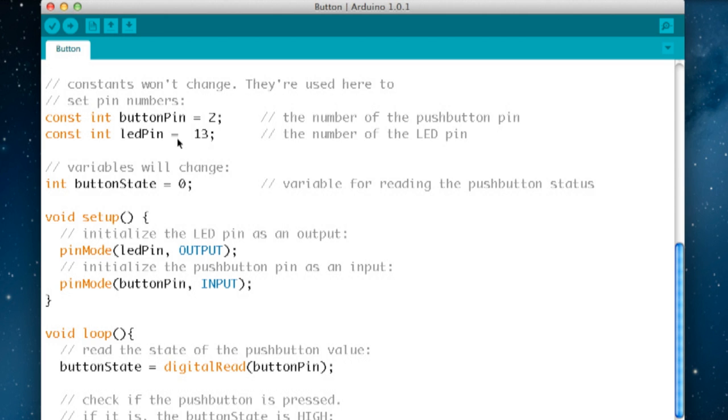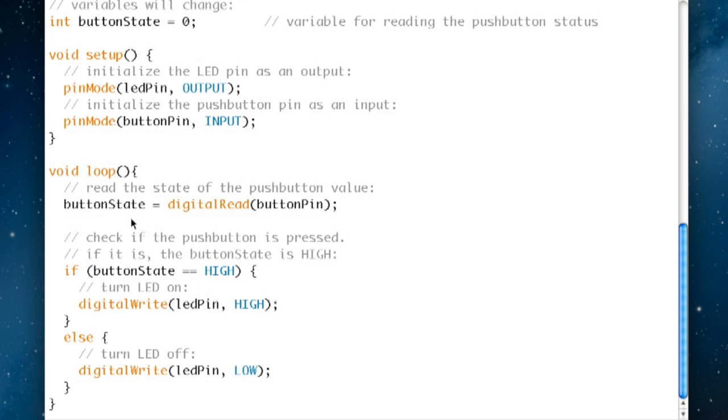Let's go down to the code. It defines two constants which is the button pin 2 which is the input and the LED pin 13 which is our output. It sets another variable for the state of the button, so first of all we're saying it's zero so the button is off. In the setup routine it's just initializing the LED pin which we know is pin 13 as output, and it's initializing the input pin which we know is pin 2 as an input so the hardware is set up.